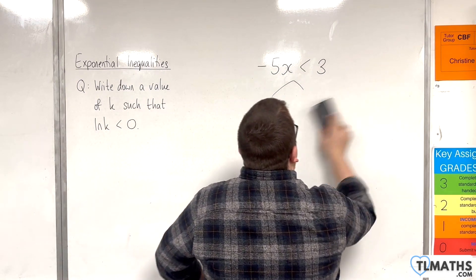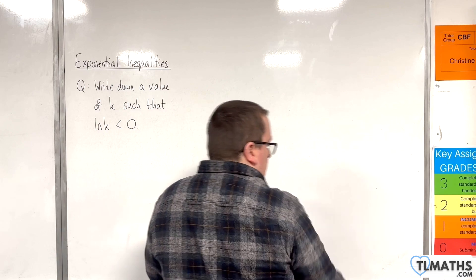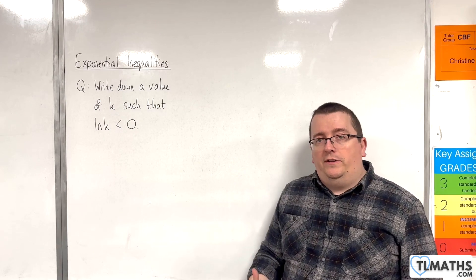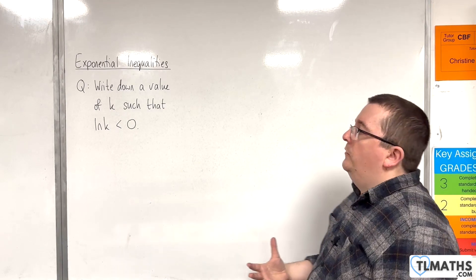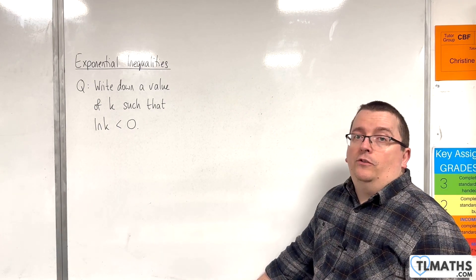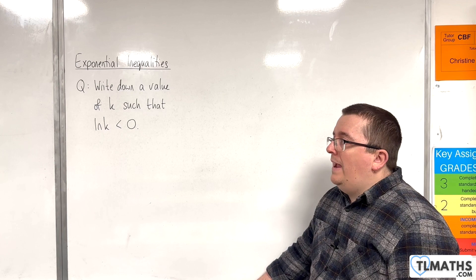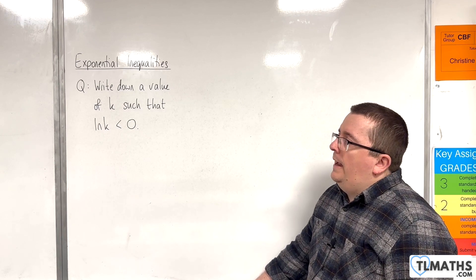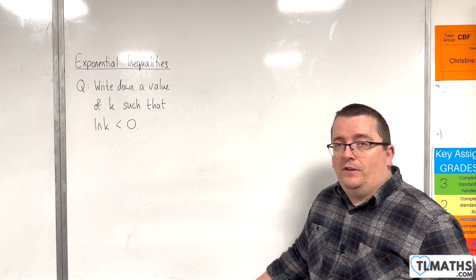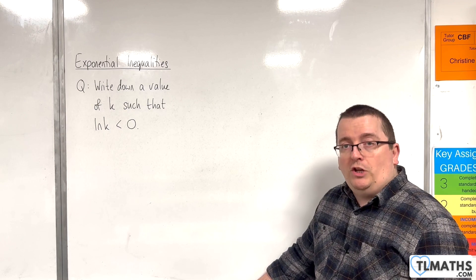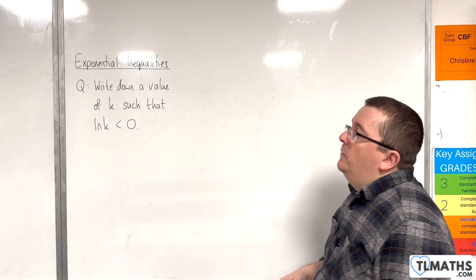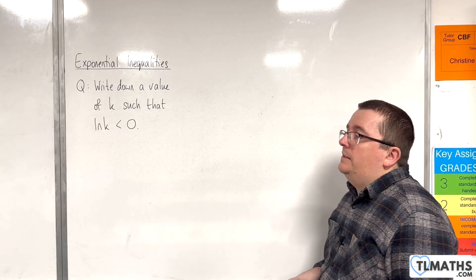Now, the second thing that we need to consider is the answer to this question here. Now, I'm going to be using logging both sides as part of this method to solve exponential inequalities. So, I need to be a little bit careful with creating negative values. And the reason why I need to be careful is precisely for the reason for the first thing that we looked at. Okay? Dividing or multiplying through by a negative will change the direction of the inequality symbol. So, the question is, write down a value of k such that the natural log of k is less than 0.